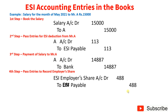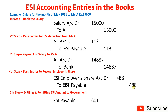Step 5 — e-filing and remitting the ESI amount to the government before the due date: debit ESI Payable Rs. 601, credit Bank account Rs. 601.